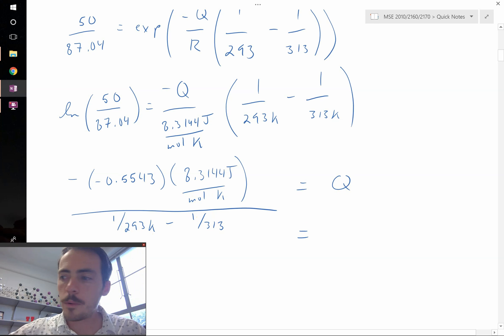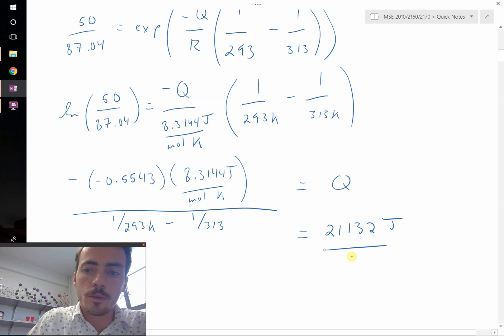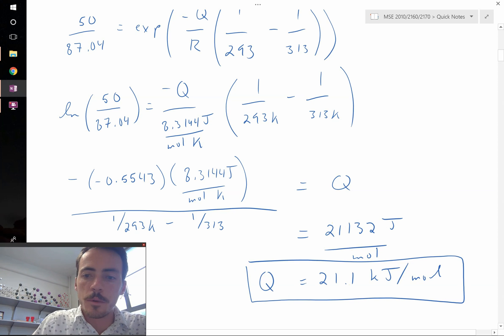And I come up with a value of 21,132. So 21,132, that would be in joules per mole. Or if we turn that into kilojoules, that's equal to roughly 21.1 kilojoules per mole as our activation energy for stress relaxation in this polymer system.